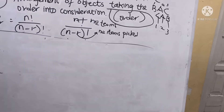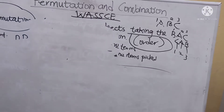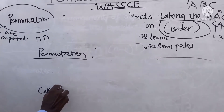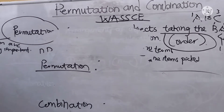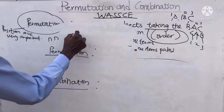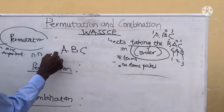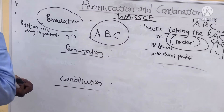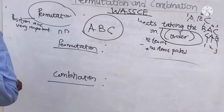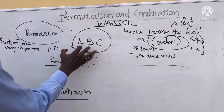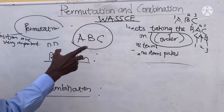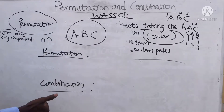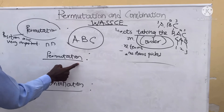Now let's find the difference between permutation and combination. You are given A, B, C. If the order is not important, we are talking about combination. If the order is important, we are talking about permutation. Let's solve permutation first.